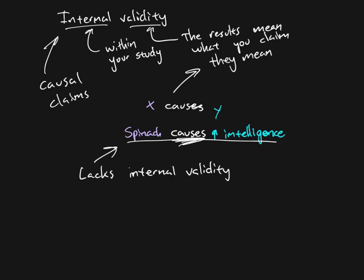We saw that the reason why that design lacked internal validity, why we couldn't say that spinach caused intelligence, was because there were alternative explanations. One alternative explanation is that smarter people eat spinach.